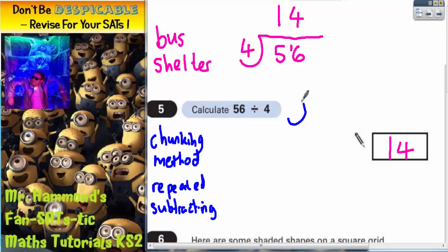So for example, this is how you would do the chunking method on this question. We could subtract a nice easy chunk of 4s from 56. A nice easy chunk of 4s would be 10 4s, because 10 4s are 40. So that would be a nice easy one to do.